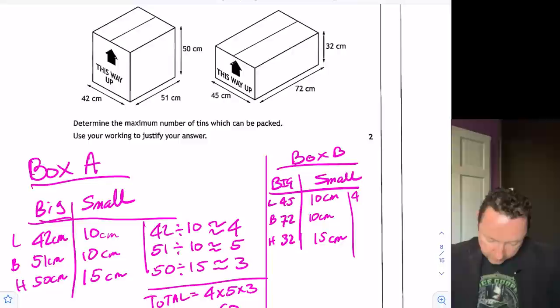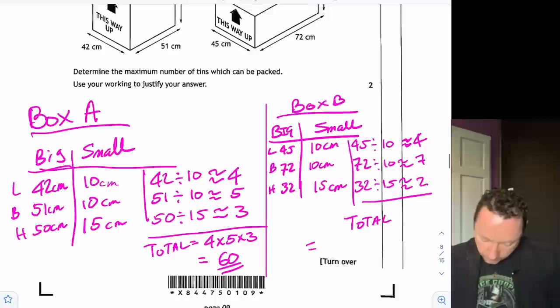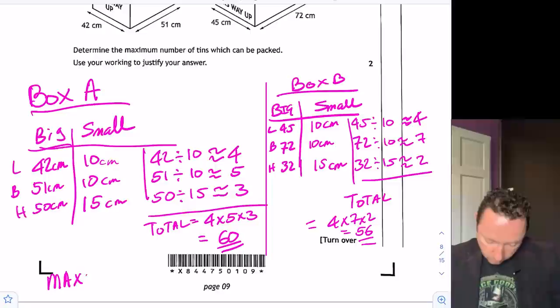We get 45 this time divided by 10, which is about 10, 20, 30, 4. Then we've got 72 divided by 10, which is about 7. And then we've got 32 divided by 15. 15, 30, that's about 2. So our total for this box equals 4 times 7 times 2. 4 sevens are 28, times 2 is 56. So to determine the maximum number of boxes to be packed, max equals 60 in box A.